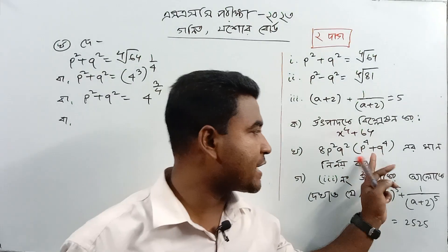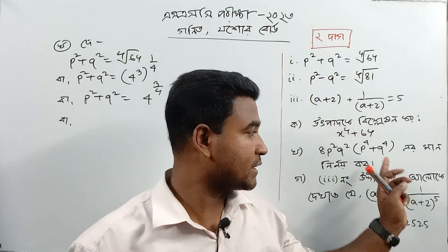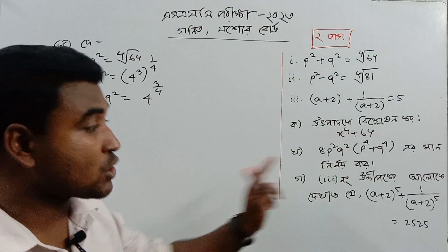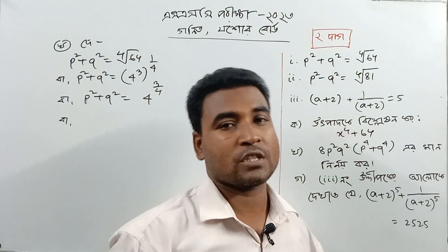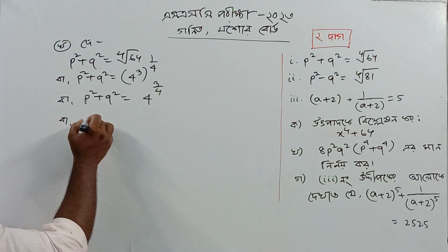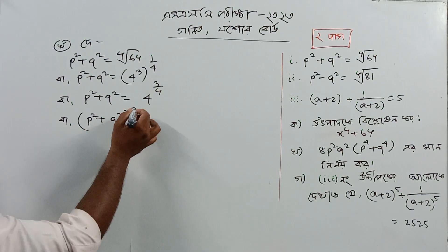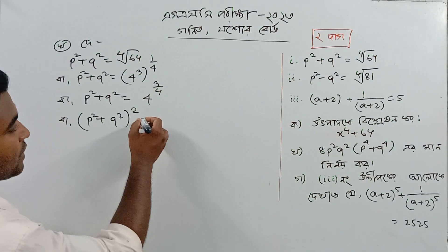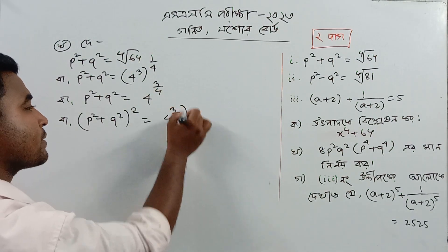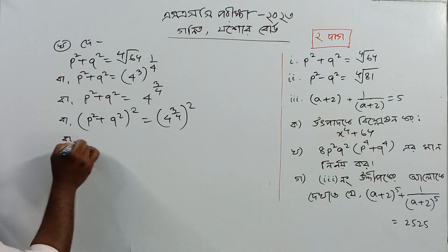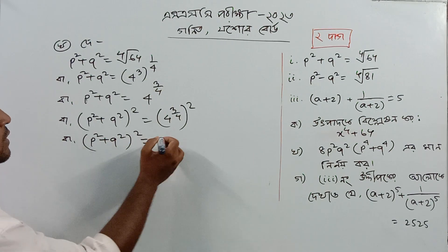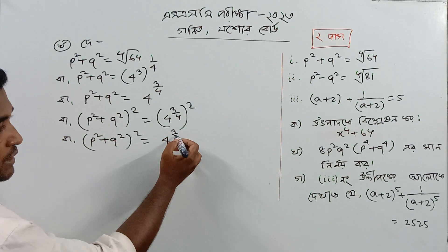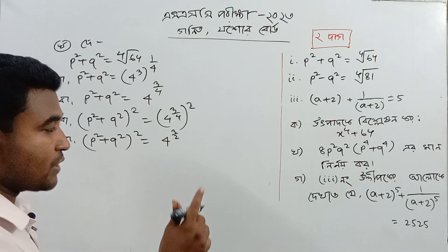Now let us see. Ps² plus Ps² plus Ps² — that means we are only going to use Ps² plus Ps² plus Ps². So we are going to use the square root. When we use the square root, we will put P square and Q square in the square here, and we will put 3 by 2 — that means 3 into 1 by 2 — so we put the root over 4.